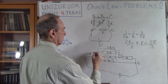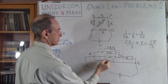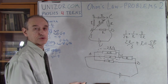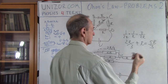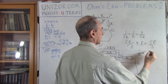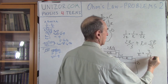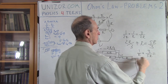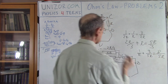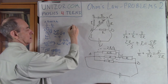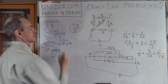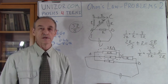You have 5R/3 on the top branch and R on the bottom branch. To combine them in parallel, add the inverses: 1 over R plus 3 over 5R equals 8 over 5R. So the total resistance is 5R over 8. This is the total resistance of the entire circuit.